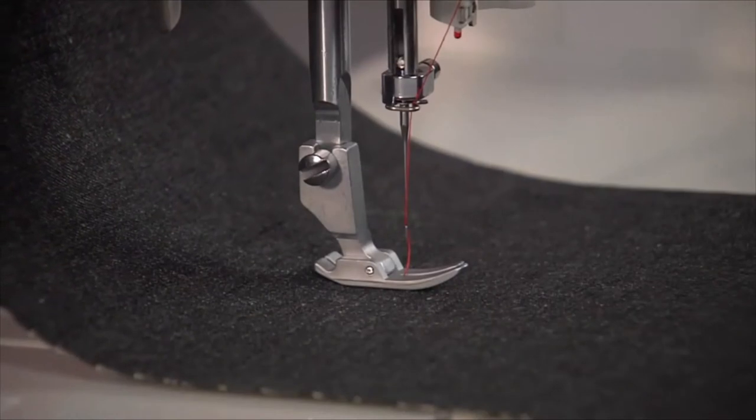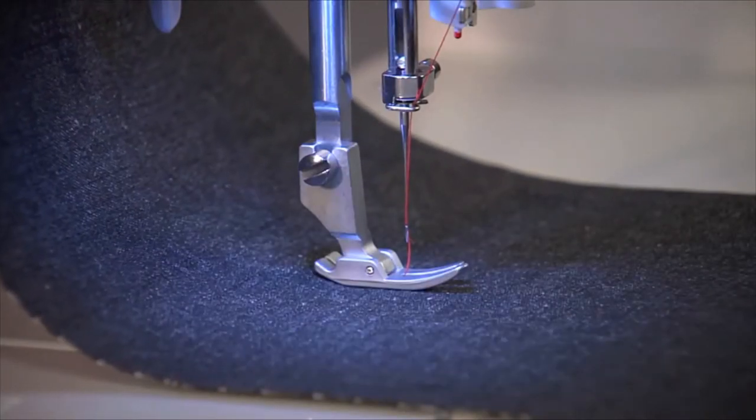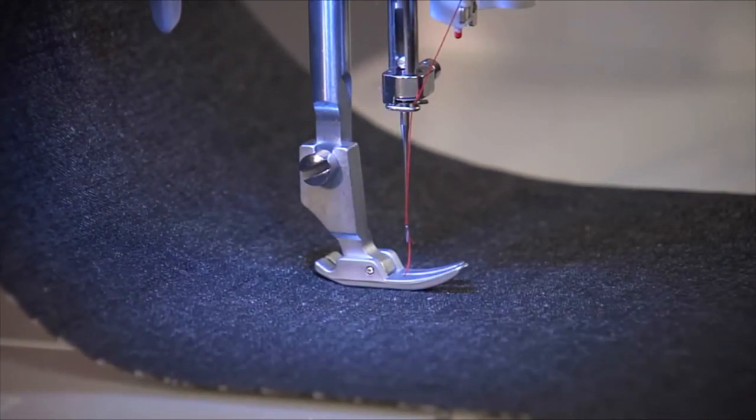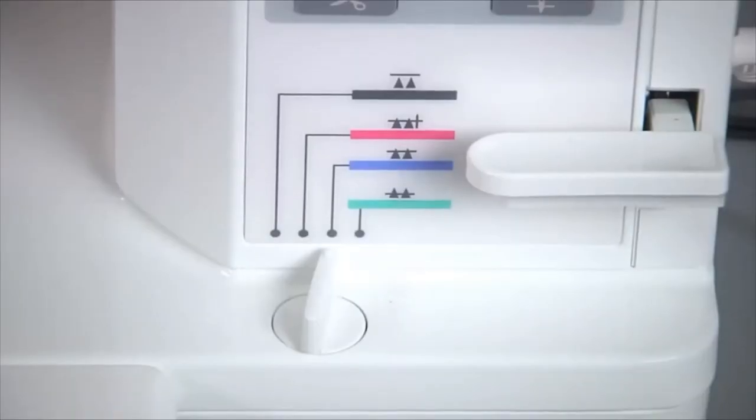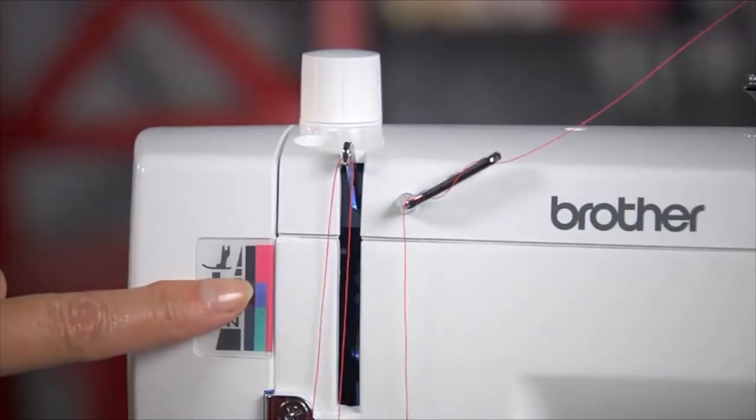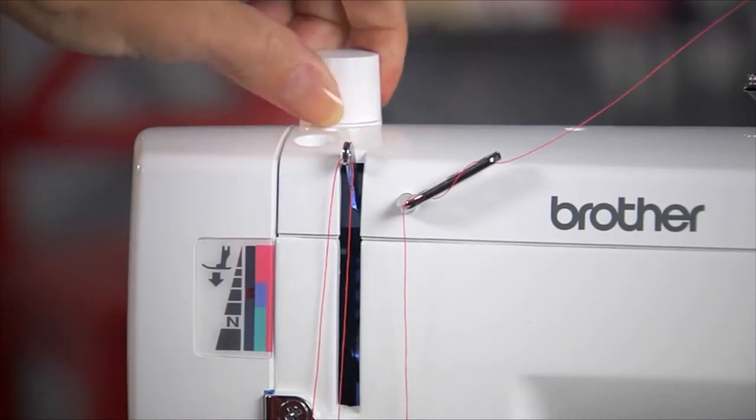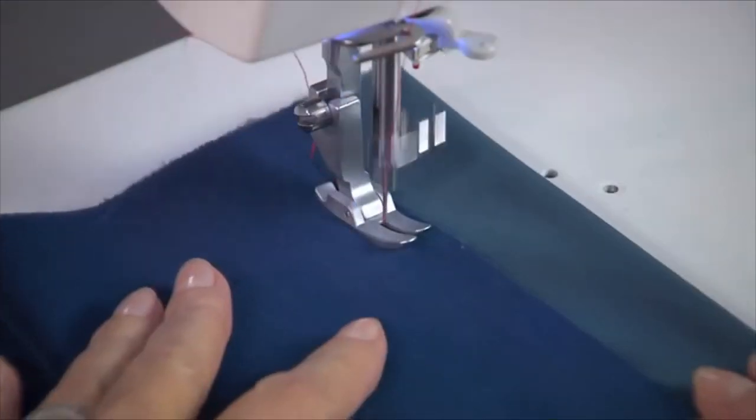The bright, but gentle on the eyes, LED light allows you to see what you're doing, even on dark fabrics. You can set the color-coordinated feed dog adjuster and the presser foot pressure dial, allowing you to sew with ease on all types of fabric, even special ones like velvet.